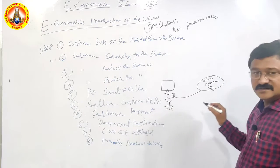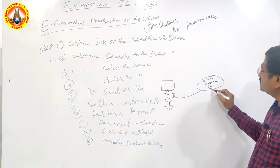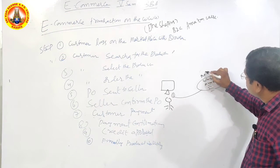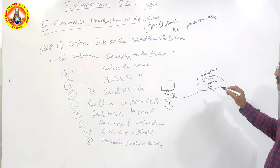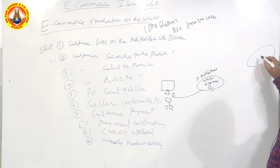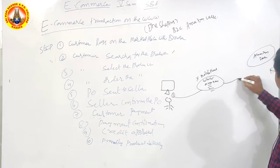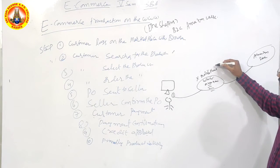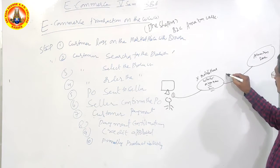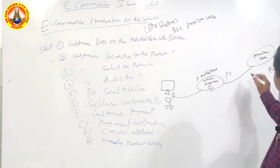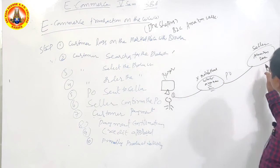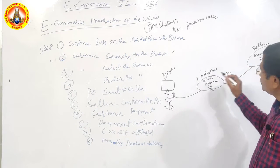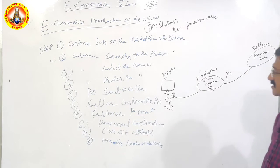The second step is to select the product. He is searching for a mobile phone. The seller here is Amazon. Once he decides, he sends the purchase order — stating 'I want to buy this mobile phone at this cost.' The buyer is the customer; the seller is Amazon. He sends the purchase order to the seller.